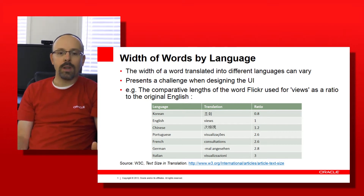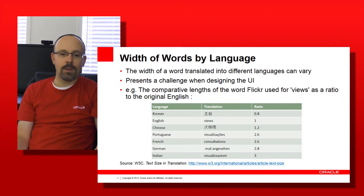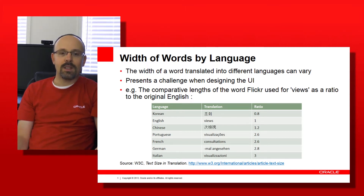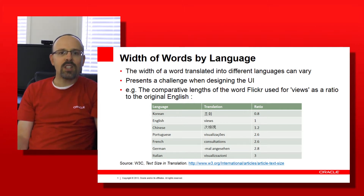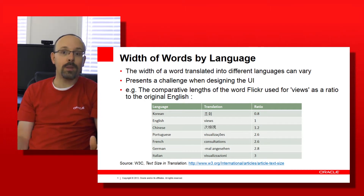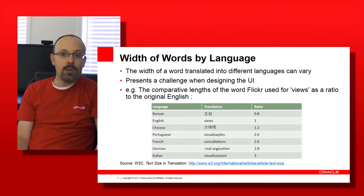For example, Korean is probably the most compact expression of the concept, whereas French, German, and Italian are much longer. Italian is three times the length of the English equivalent for the same word. This is a big challenge when designing a UI. You need to come up with a design that will look good in your preferred language, typically English, but will accommodate the need for space for other languages.